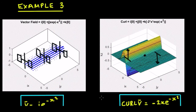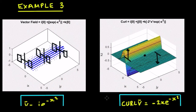As a reminder, curl is in fact a vector function, but here we've just drawn it as a scalar just to make the examples clear. The original equation is e to the minus x squared, and the curl is going to be minus 2x times e to the minus x squared. That has worked out correctly in the script as well.